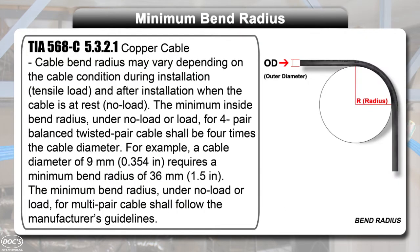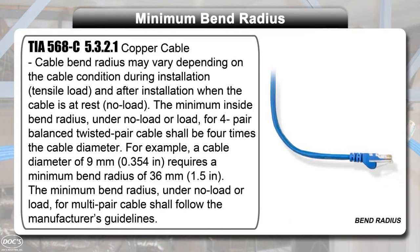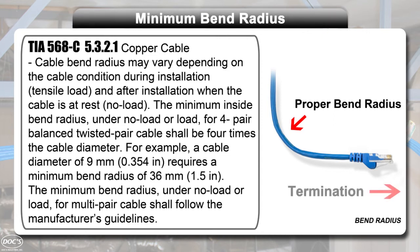Bend radius refers to the minimum radius that a cable can be allowed to bend without damaging the cable. All changes of direction on a cable run should be gradual and smooth whenever possible. For UTP cable, TIA requires a minimum inside bend radius of four times the diameter of the cable. It is always the responsibility of the installer to ensure that proper bend radius is maintained during a cable run and at termination.